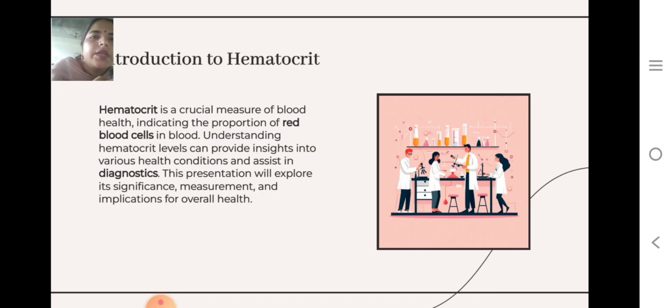Introduction to Hematocrit. Hematocrit is a crucial measure of blood health indicating the proportion of red blood cells in blood. Understanding hematocrit levels can provide insights into various health conditions and assist in diagnostics. This presentation will explore its significance, measurement, and implications overall.